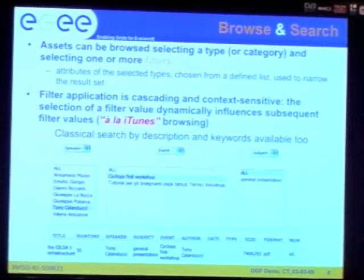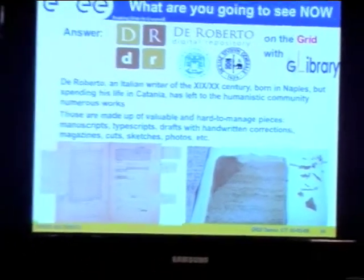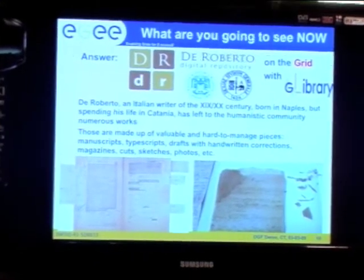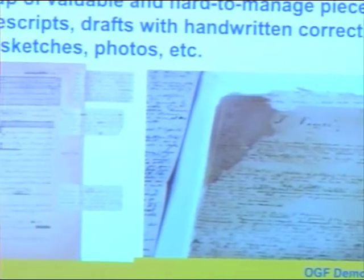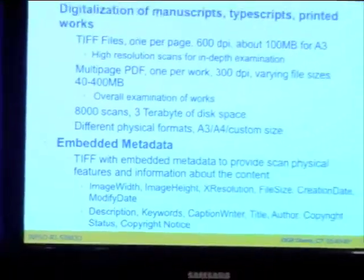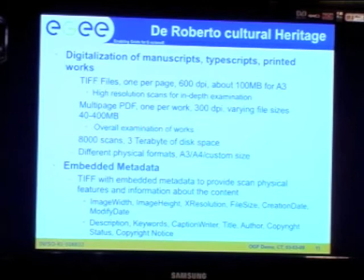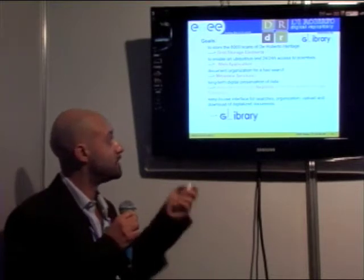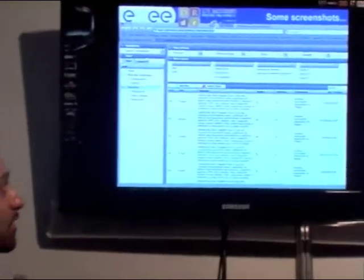Instead of handling music or videos, we can handle anything that can be stored in the system. As a use case, we have the manuscripts, typescripts, and drafts of the famous Italian writer Federico De Roberto. This work was done in collaboration with the Faculty of Letters and Philosophy in Catania, who digitalized more or less 8,000 documents producing roughly 3 terabytes of data. We use G Library — the iTunes for the grid — to give people access to these documents.